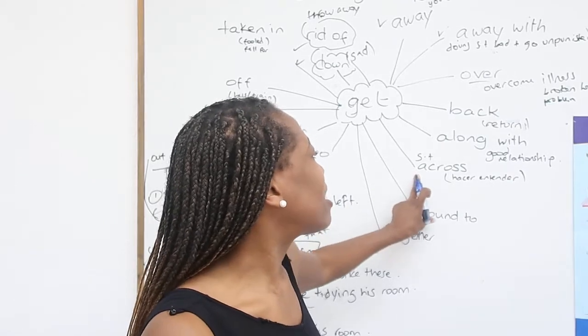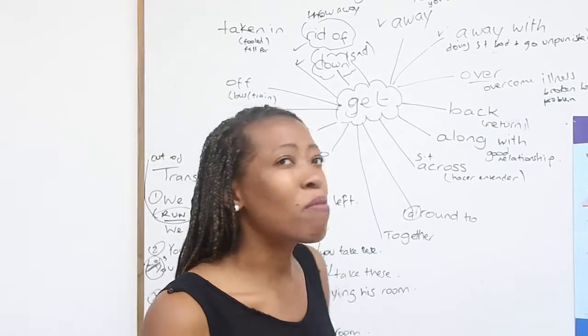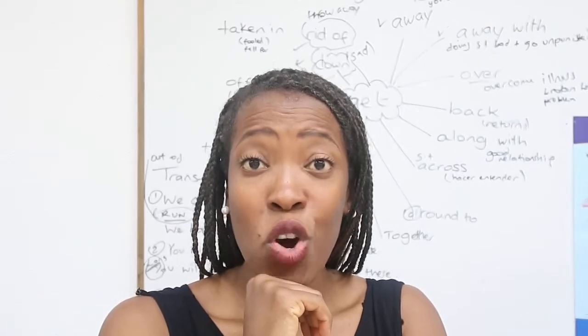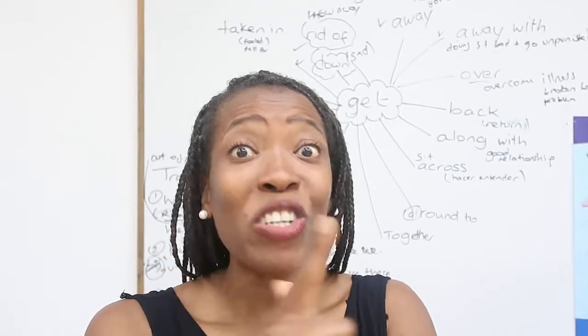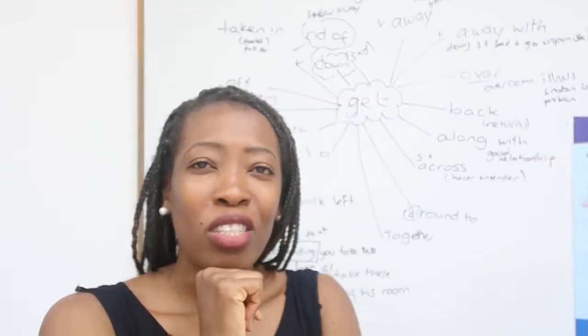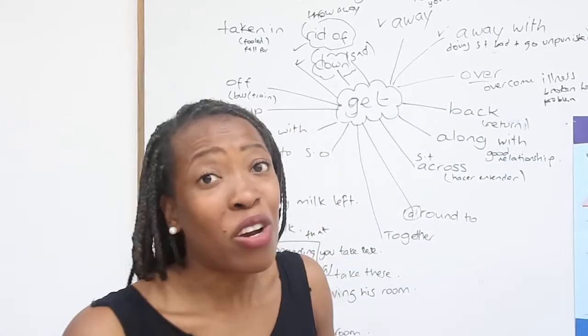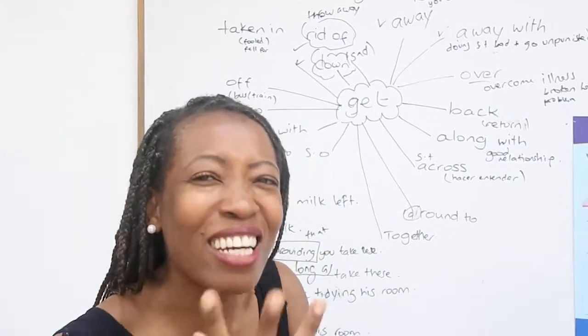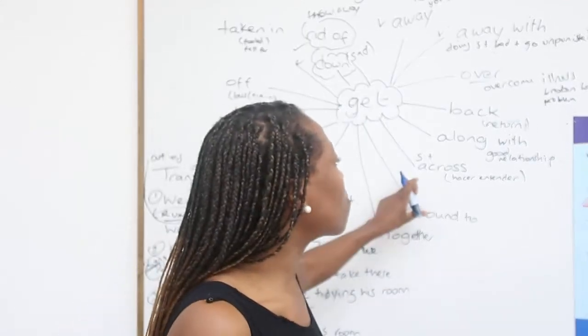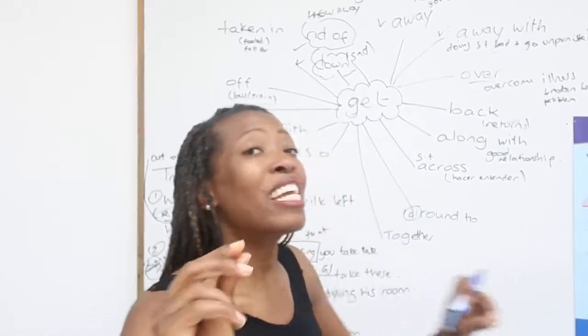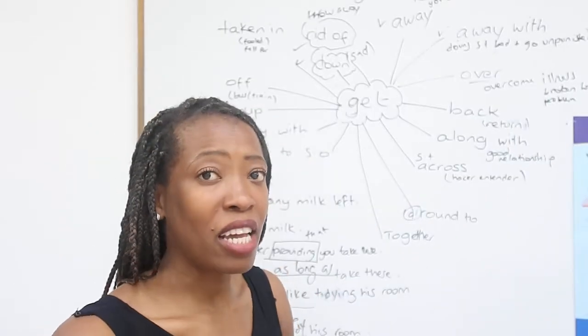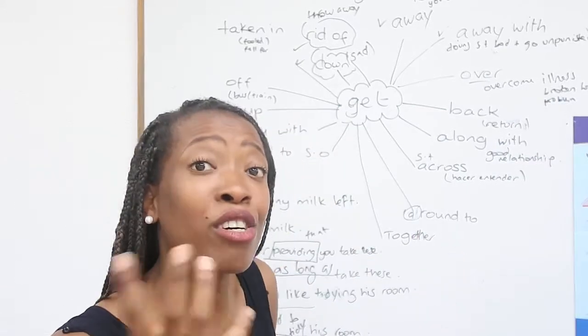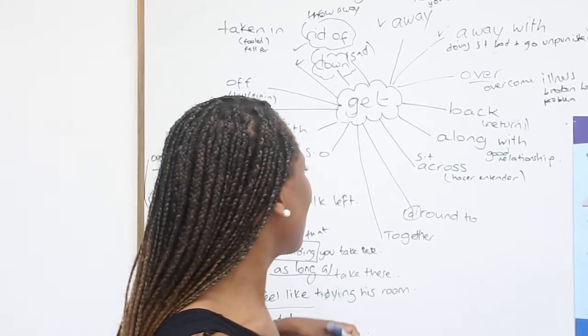To get something across. To get something across is when you explain something to someone. You manage to get them to understand what you're saying. I couldn't get that maths question across to him. I couldn't make him understand that maths question. To get something across. In Spanish, hacer entender. To make someone understand something, you get something across. Get your idea across. Get the information across.